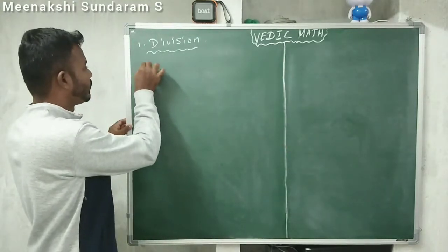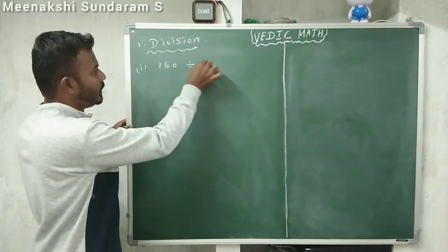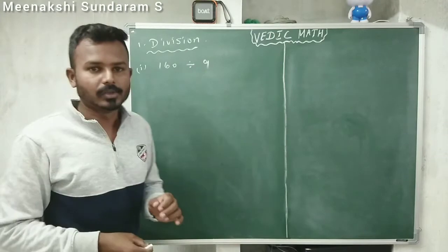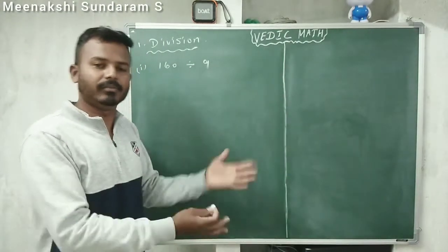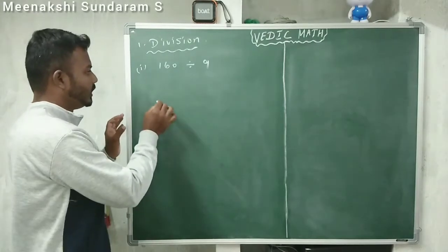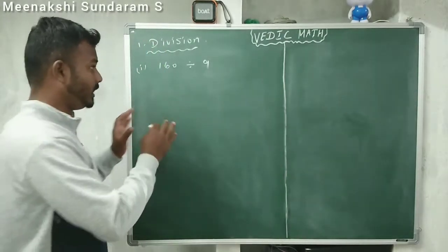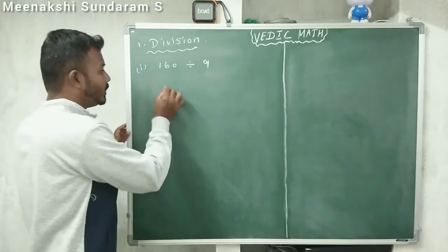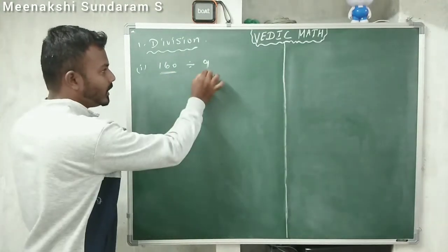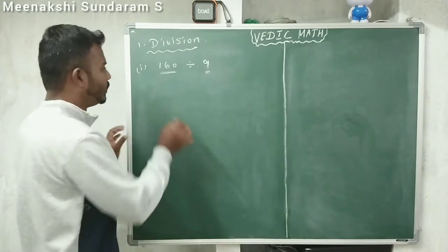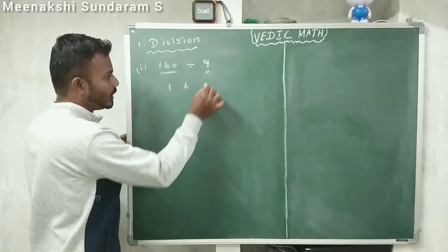So, first problem: 160 divided by 9. Usually we can do it in the traditional method. Now, we can do the same problem in basic math. When we are using basic math, within a fraction of a second, we will get an answer. Now, write the dividend 160 and the divisor 9.